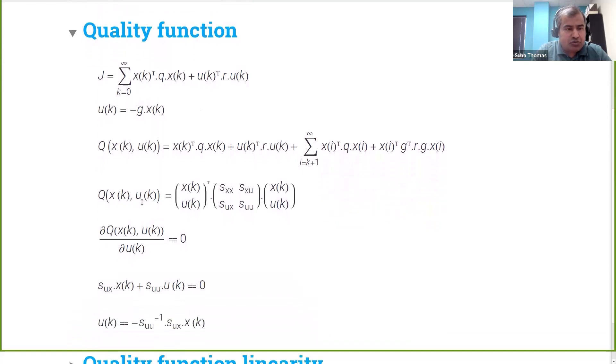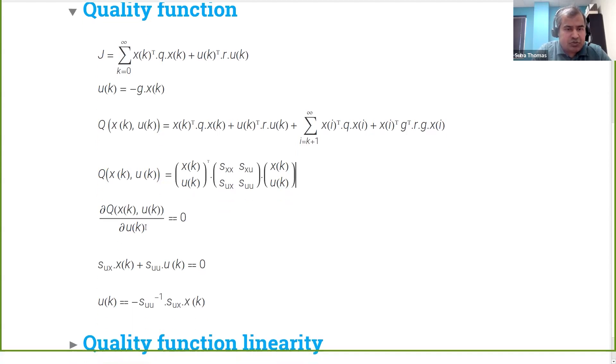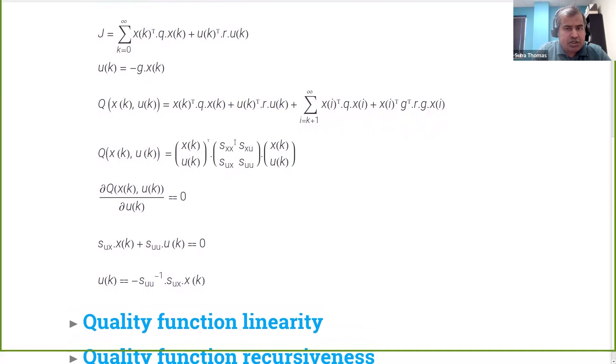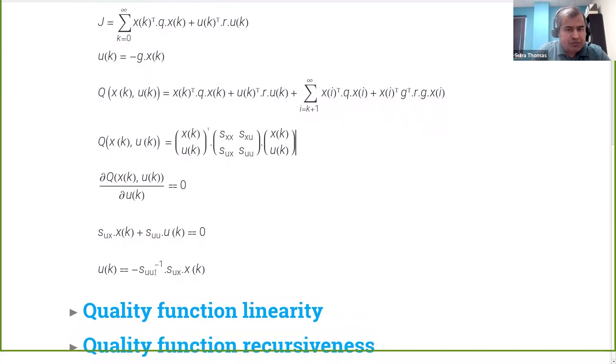If I want to minimize Q, I want to choose a u that minimizes Q, I have to compute this partial derivative. I work this out, and then I can get u in terms of these submatrices. This is called the kernel matrix. The kernel matrix is going to depend on A, B, q, and r. Again, the situation here is we do not know A and B, so we cannot compute it like this. To get out of this impasse, we go back to this Q function and make two observations.